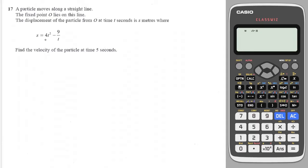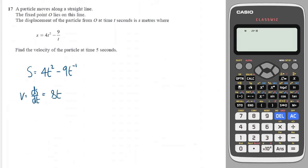Next question — we need to differentiate this but first we need to rewrite the power. So S is equal to 4t squared and we've got t on the bottom, so that becomes t to the minus 1. Differentiating to find the velocity: 2 times 4 gives 8, drop the power down by 1, and minus 1 times minus 9 is plus 9, drop the power down by 1 to minus 2.